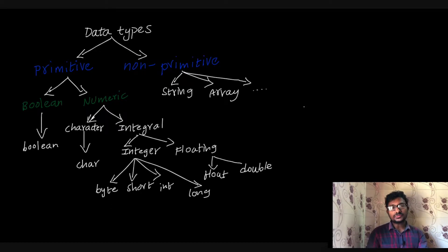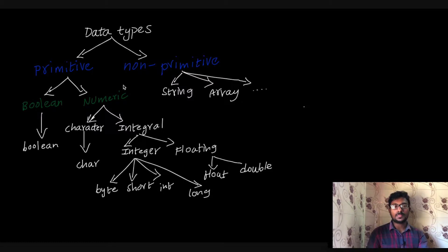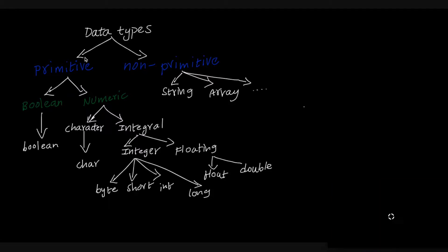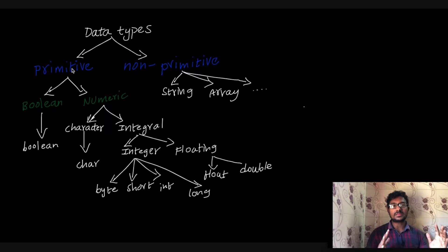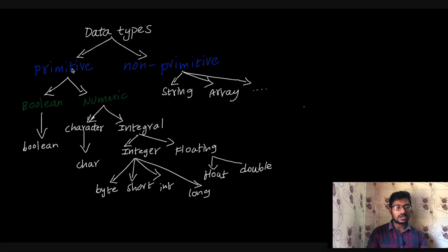In Java, why are you using data types? What data types are you using? If you are using Java language, you will classify two data types. One is primitive data types, and one is non-primitive data types. Primitive data types are the primary, simple data types, and non-primitive data types are complex data types.